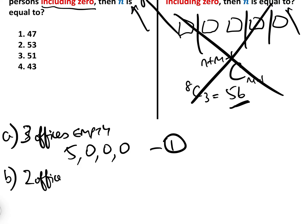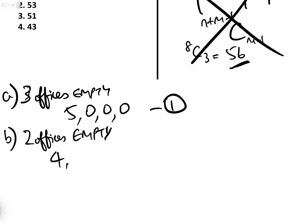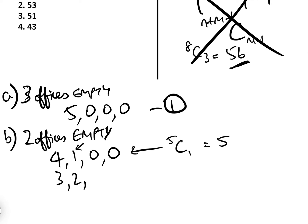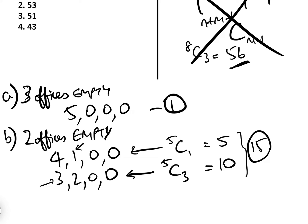Case B: where two offices are empty. We could have four employees in one office and one in the other — that's five ways, because there are five ways of picking that one employee, so 5C1 equals 5. We could also have three, two, zero, zero — another arrangement. How many ways? We can pick those three employees 5C3 ways, and the other two go in the other office — 5C3 equals 10. So the total number of ways where two offices are empty equals 15.